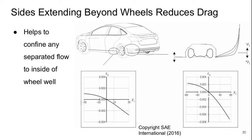This one is a little counterintuitive: extending the width of the sides of the vehicle beyond the edge of the wheel wells can actually reduce drag as well, surprisingly. The reason is that this helps to confine separated flow around the wheel to the inside of the wheel well — it essentially helps prevent it from spilling over onto the sides or back of the vehicle. So we can push out those vehicle sides a little bit at the wheel well.